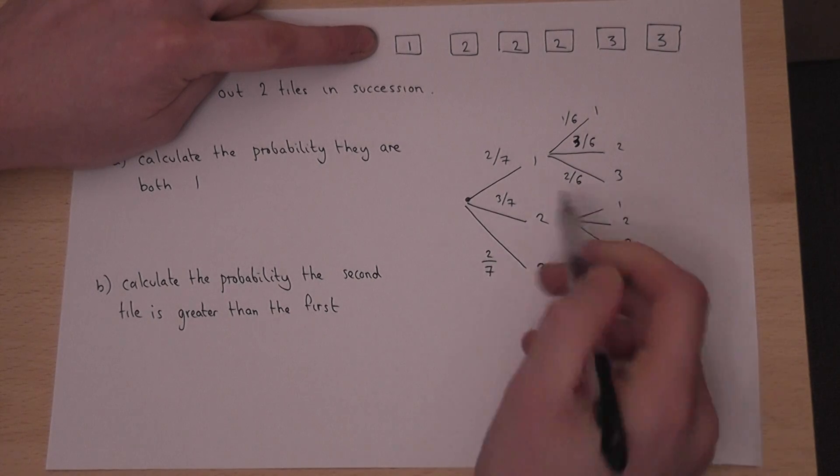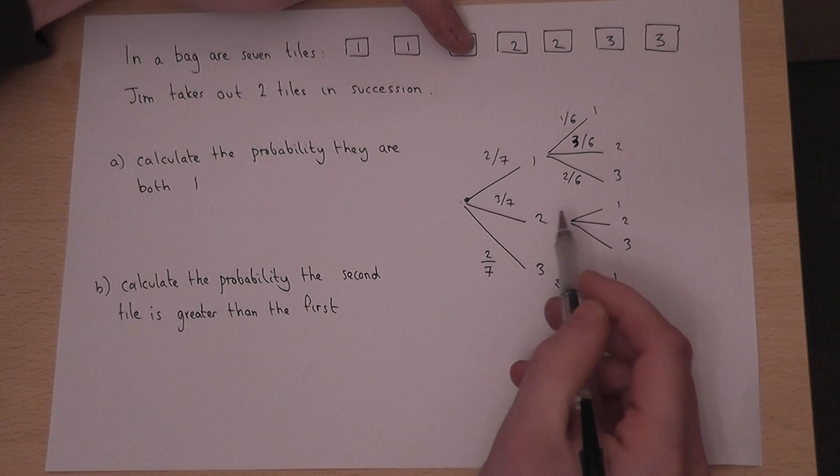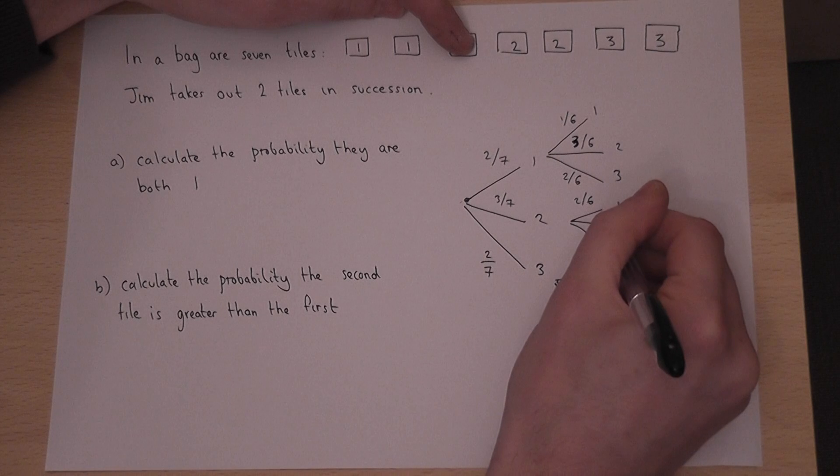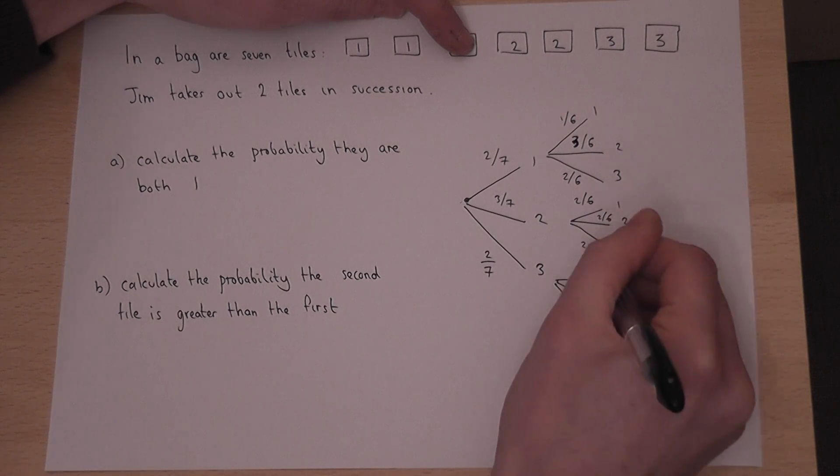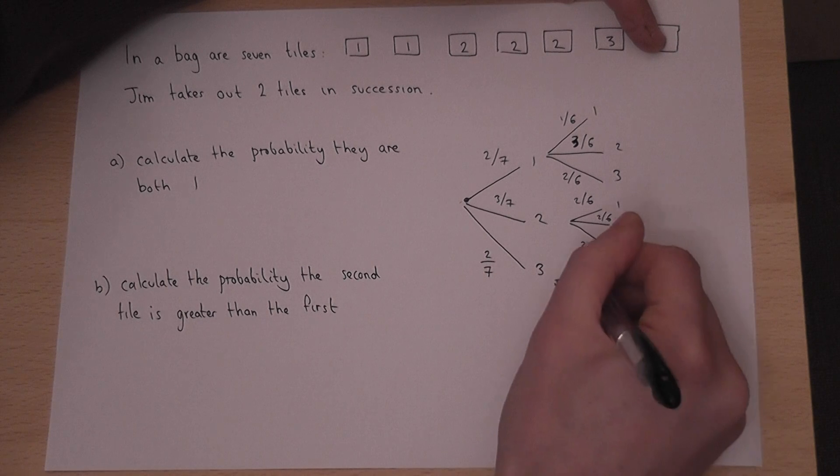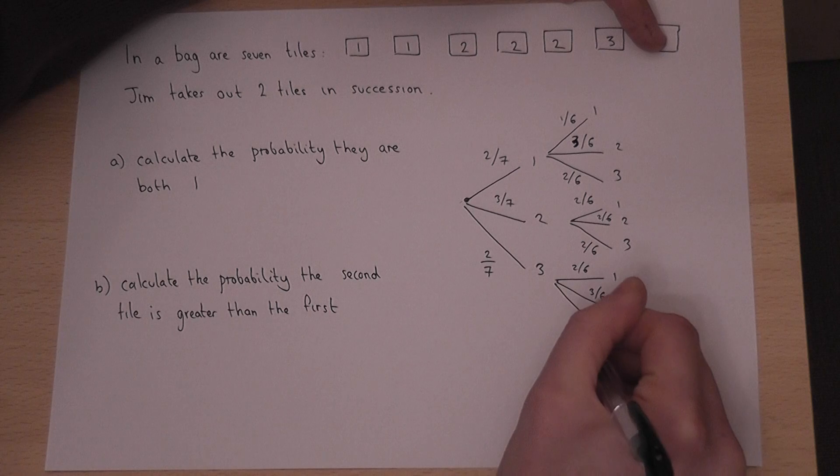That's if he pulled a one out first. If he pulled a two out, it's then two-sixths, two-sixths, and two-sixths. But if he pulled a three out, it's then two-sixths, three-sixths, one-sixth.